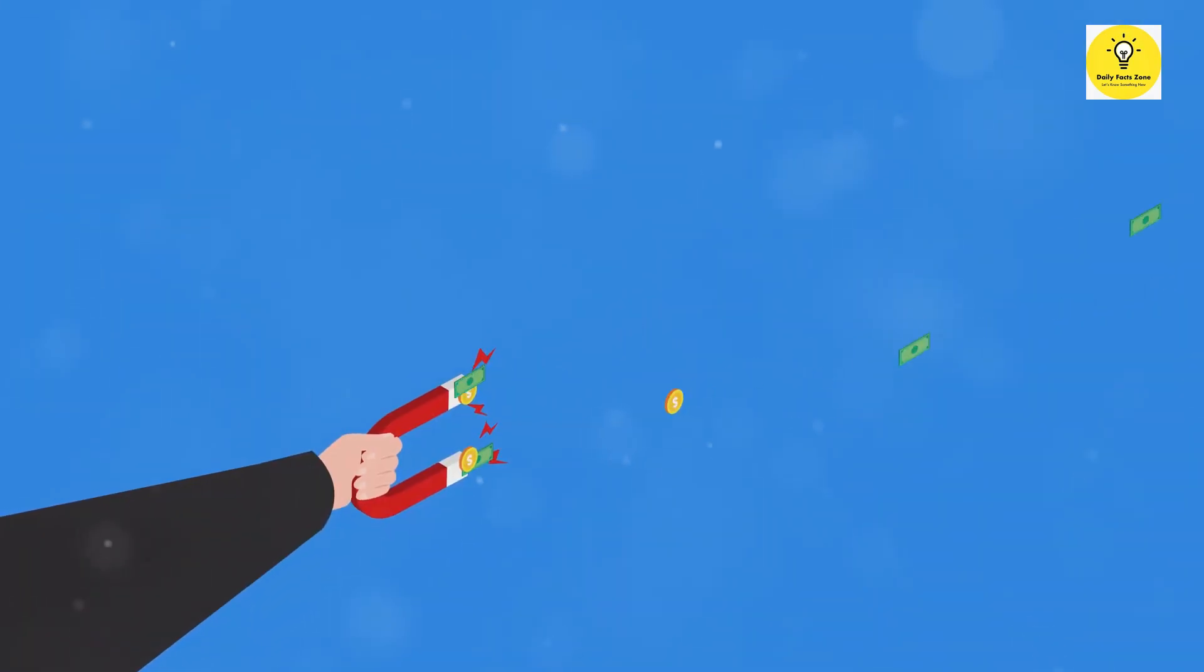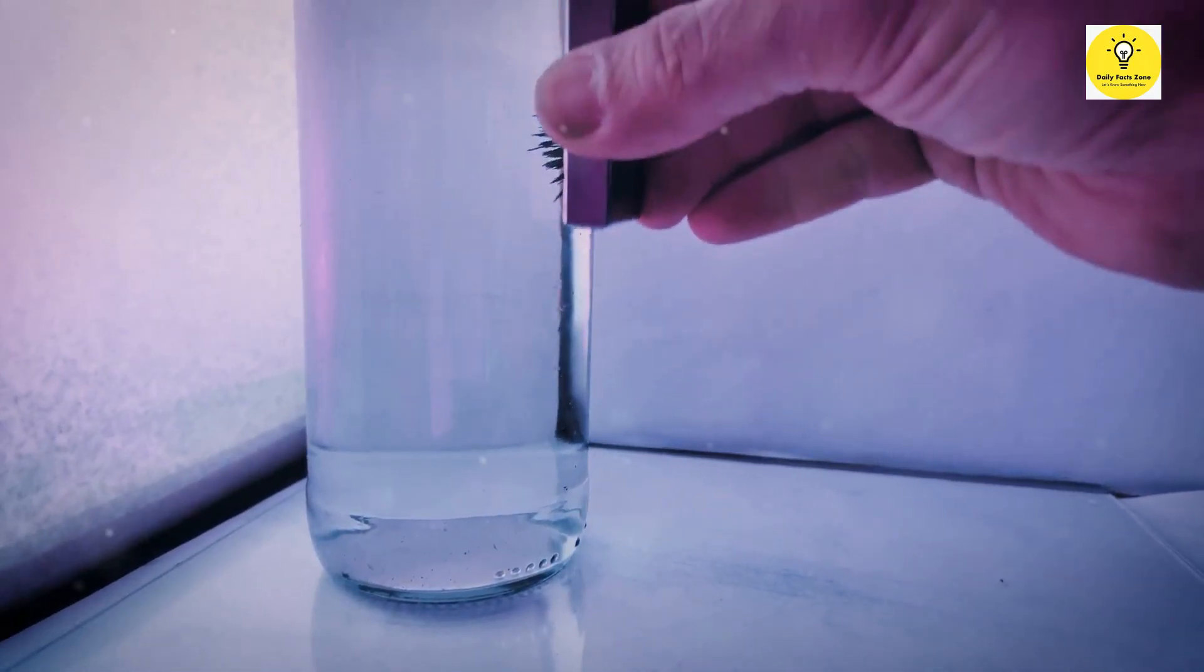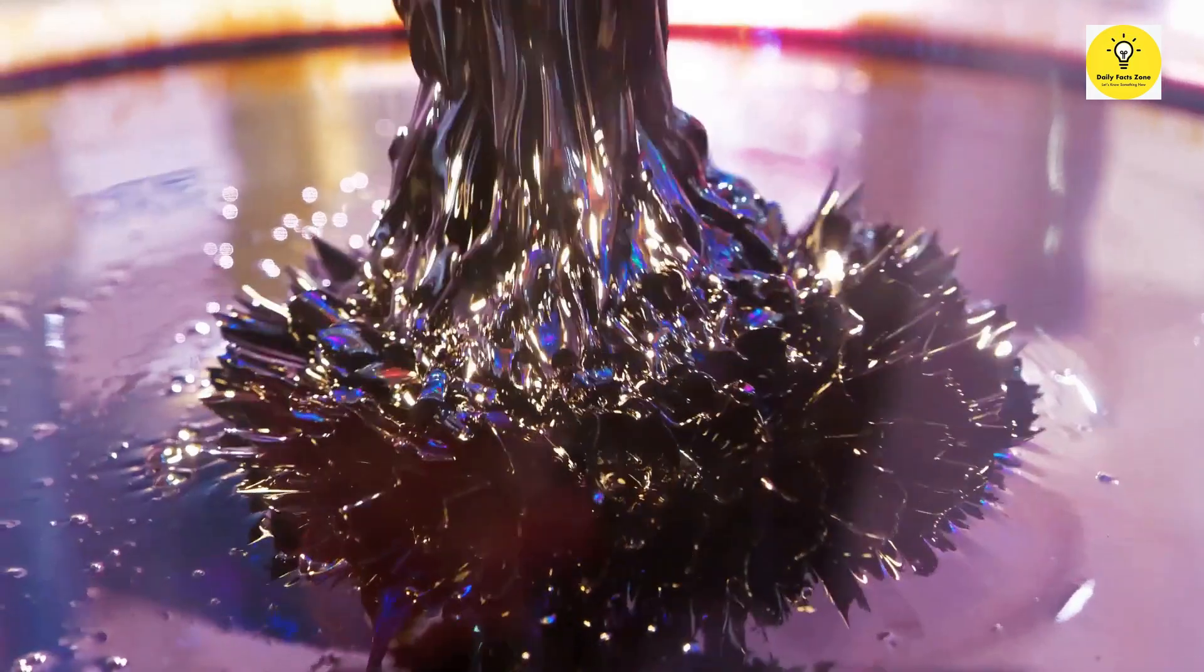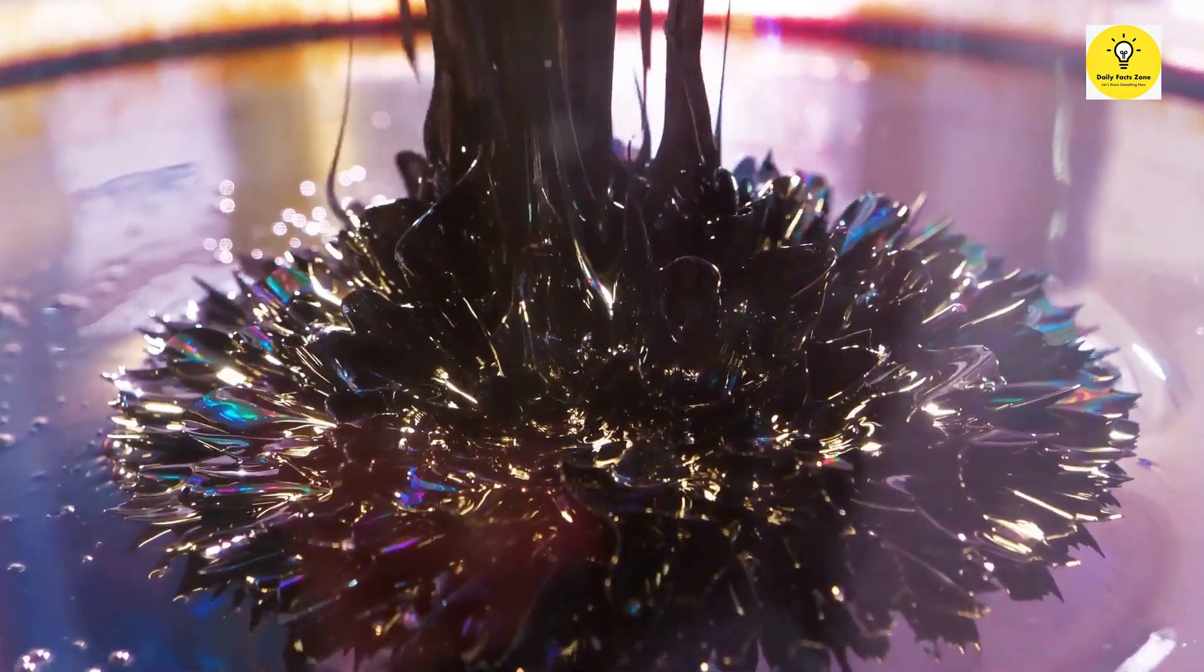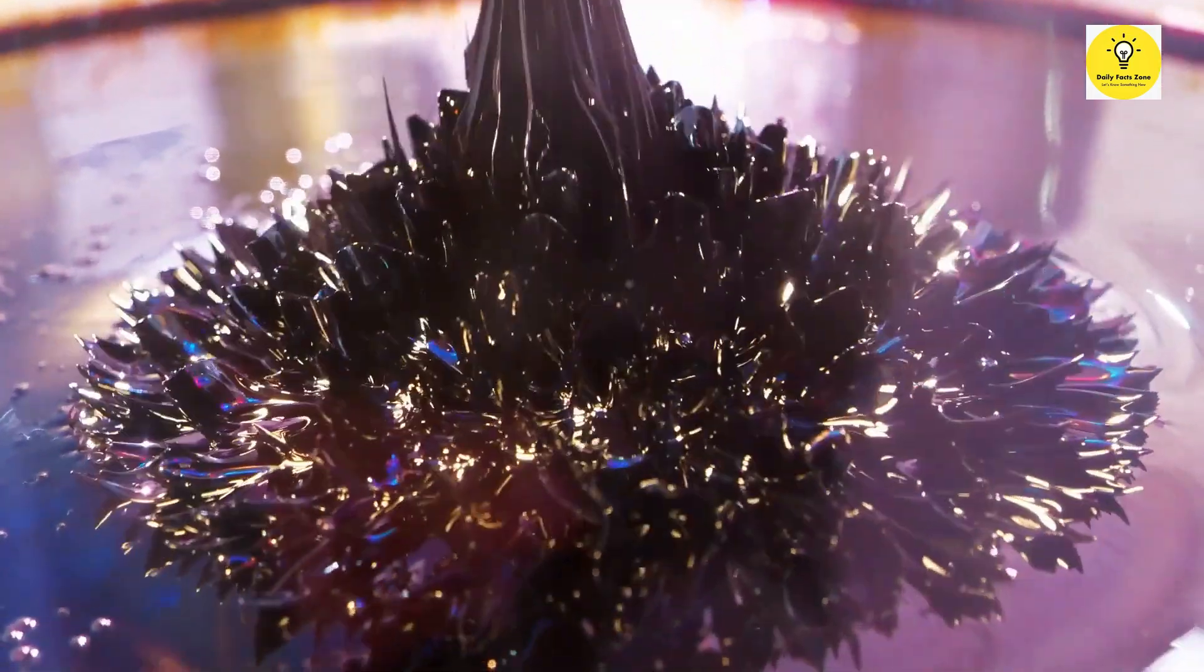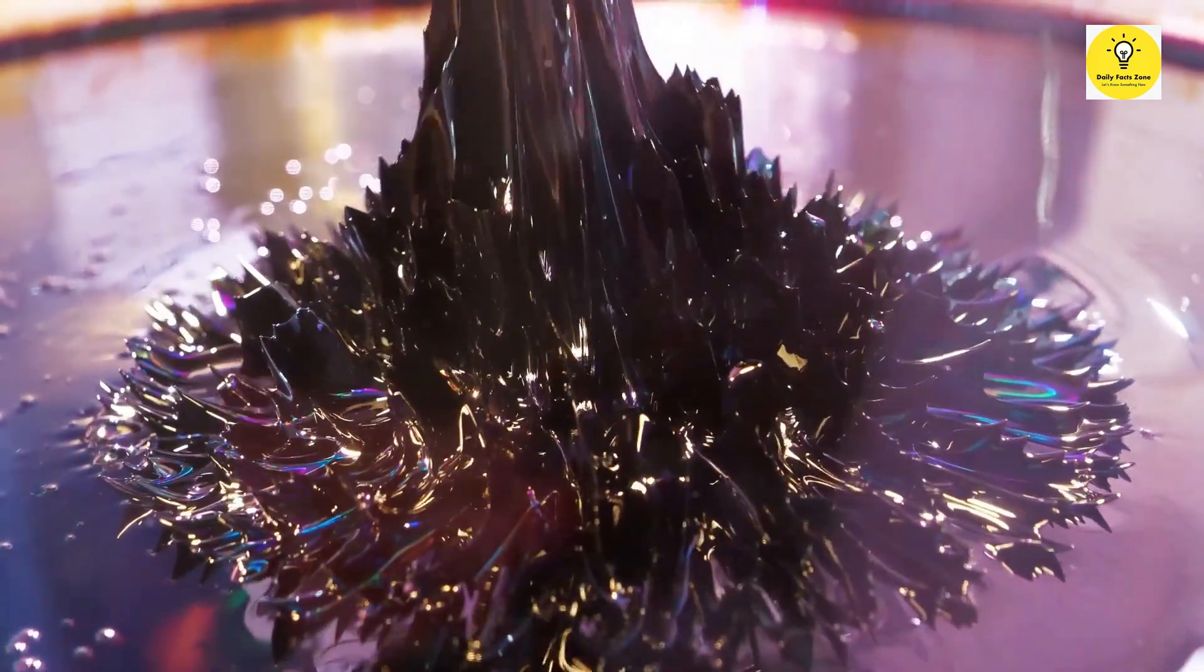Magnetic fields interact with objects in fascinating ways. Ferromagnetic materials like iron are strongly attracted to magnets. This is because their internal magnetic domains align with the external magnetic field, creating a force of attraction.